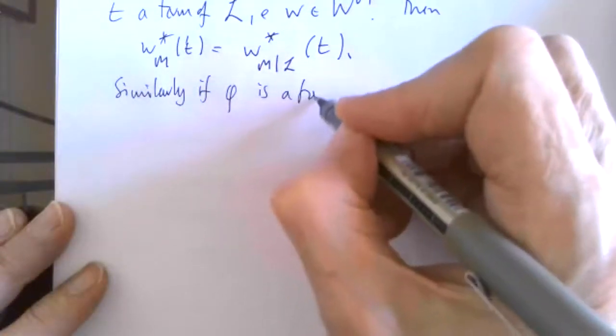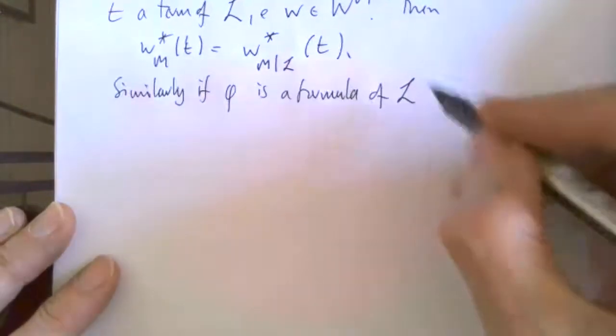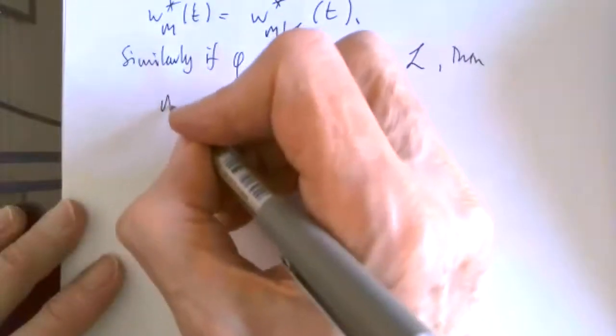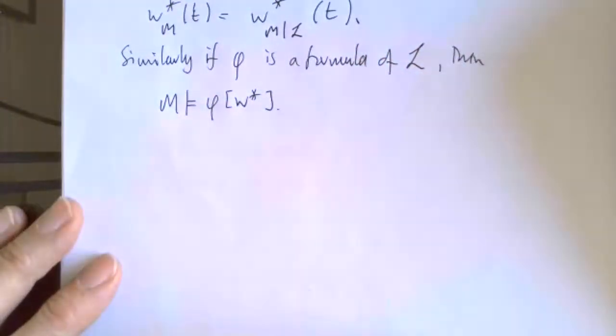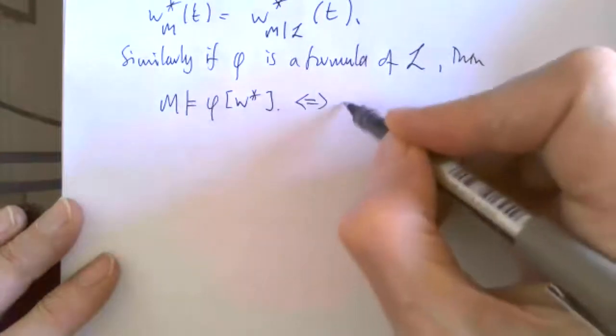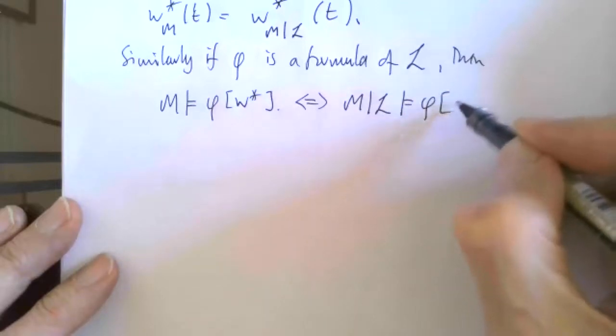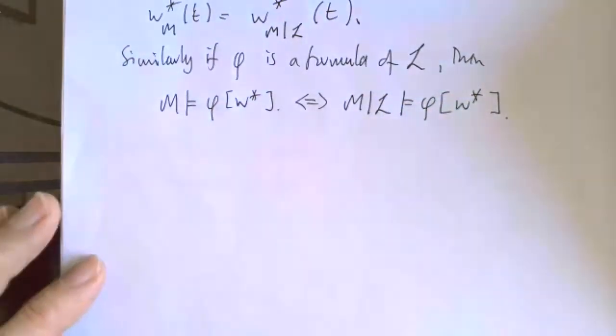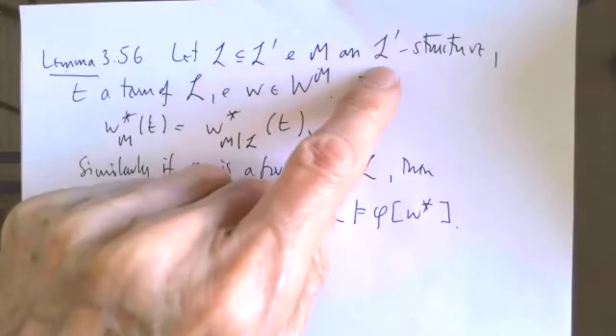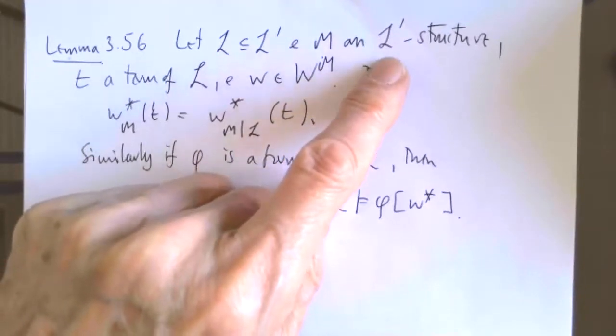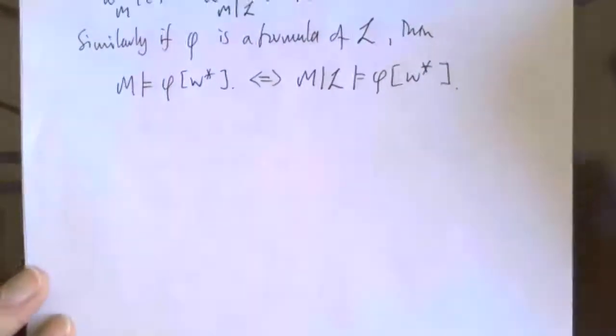Similarly, phi is a formula, again of L not L prime. An assignment here will make this come out true in M if and only if it does in the reduct structure, because there's nothing in phi that mentions any of the vocabulary or apparatus that's in L prime but not in L. So the extra pieces of the structure here don't matter.